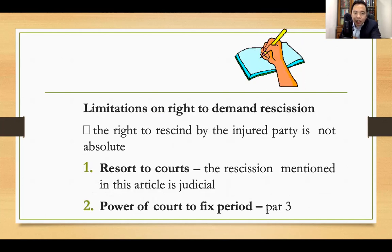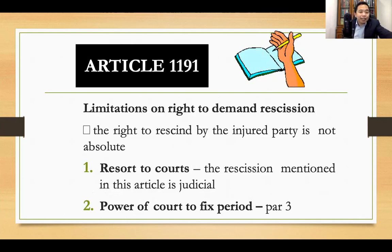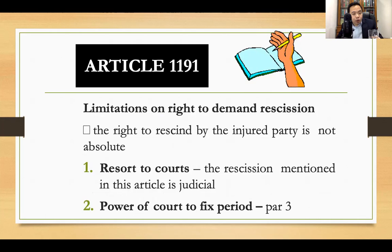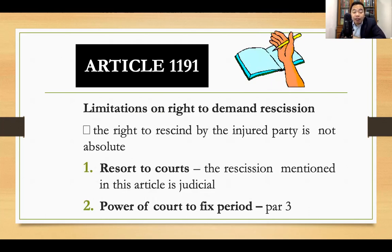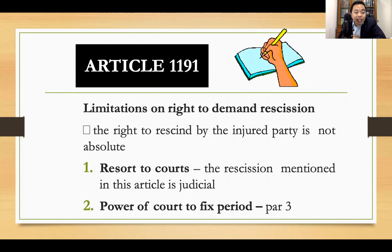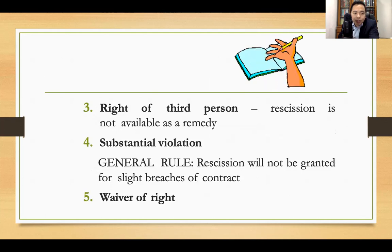Limitations on the right to demand rescission: a party may not automatically demand rescission if there is a reasonable or just cause for the court to fix the period first. Take note that rescission under Article 1191 is judicial, not extrajudicial. Second, the power of the court to fix the period is only when there is a just cause. Third, rescission is not available as a remedy against third persons.